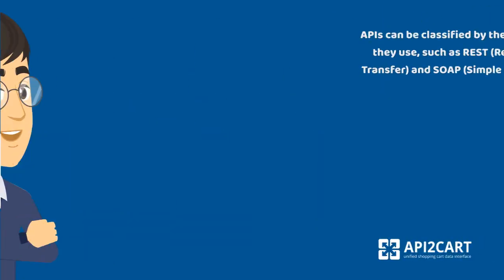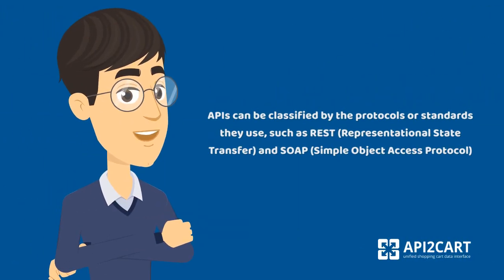APIs can be classified by the protocols or standards they use, such as REST, representational state transfer, and SOAP, simple object access protocol.